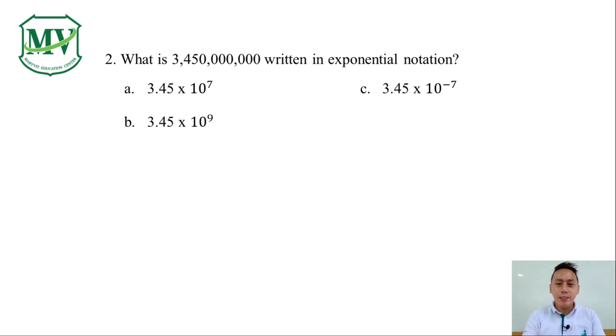Number two, what is 3,450,000,000 written in exponential notation? A. 3.45 x 10 raised to the power of 7. B. 3.45 x 10 raised to the power of 9. C. 3.45 x 10 raised to the power of negative 7. Or D. 3.45 x 10 raised to the power of negative 9. Which letter do you think is the best answer?